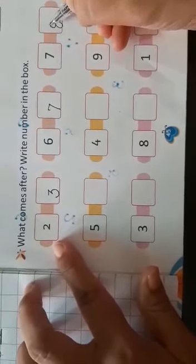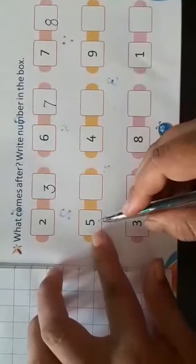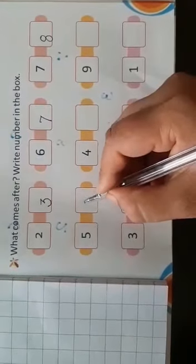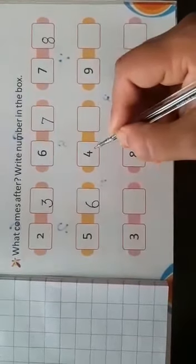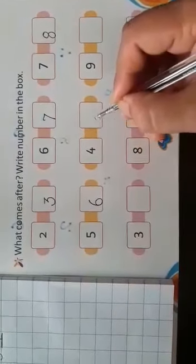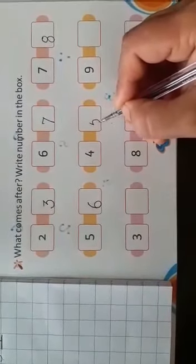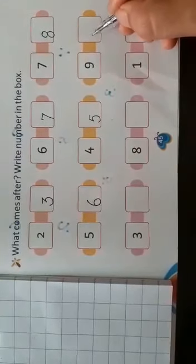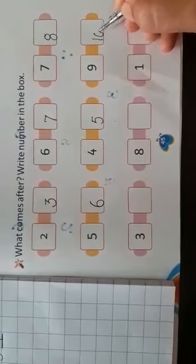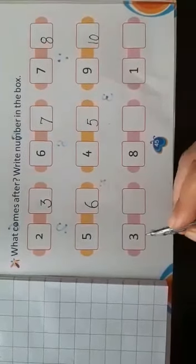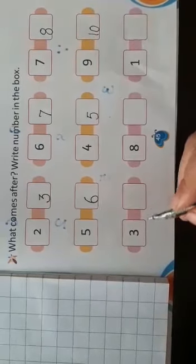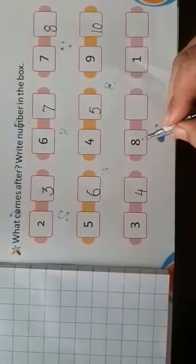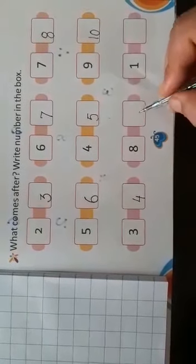Here it is written 5, what comes after 5? 6. Then 4, what comes after 4? 5. Next is 9, what comes after 9? 10. What comes after 9? 10.